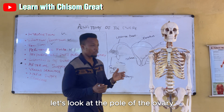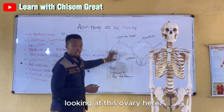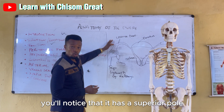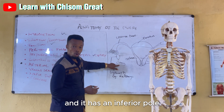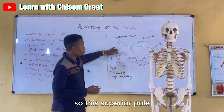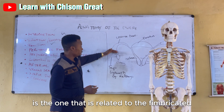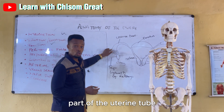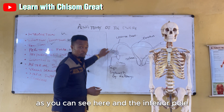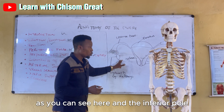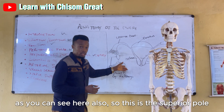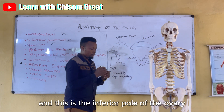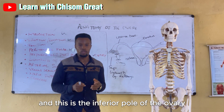Looking at the poles of the ovary, it has a superior pole and an inferior pole. The superior pole is related to the fimbriated part of the uterine tube, and the inferior pole is the lower end of the ovary.